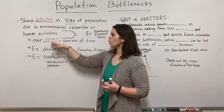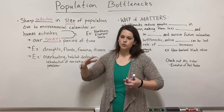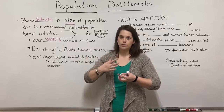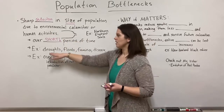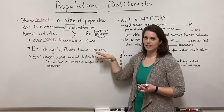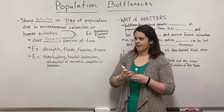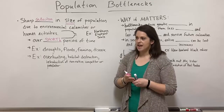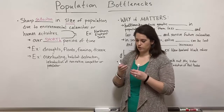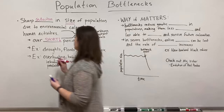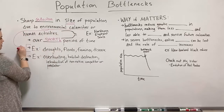We're not talking about population declines due to climate change over the course of decades. We're talking about a sudden environmental calamity — like a drought, a flood, a famine, or a disease — that can wipe out a majority of a population, say 80% or 90%, in a very short amount of time: a few days, weeks, or months. These are examples of some of these environmental calamities.